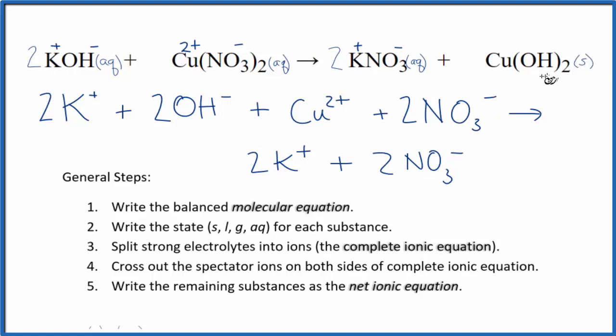And then this is a solid. And in net ionic equations, we don't split solids apart. So Cu(OH)2. So this is the total or complete ionic equation for KOH plus Cu(NO3)2.